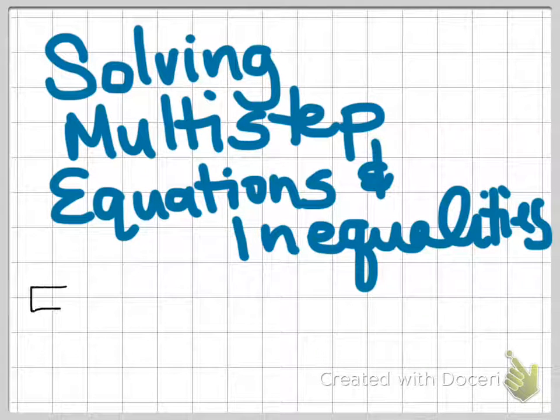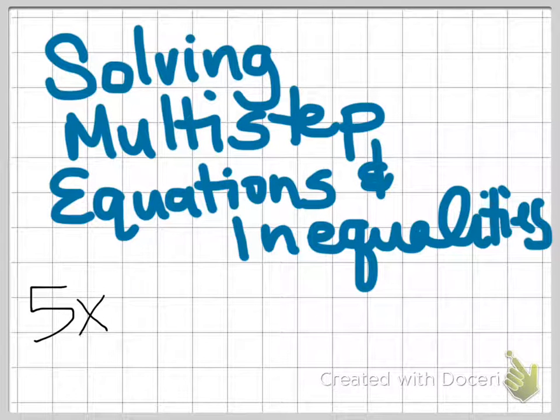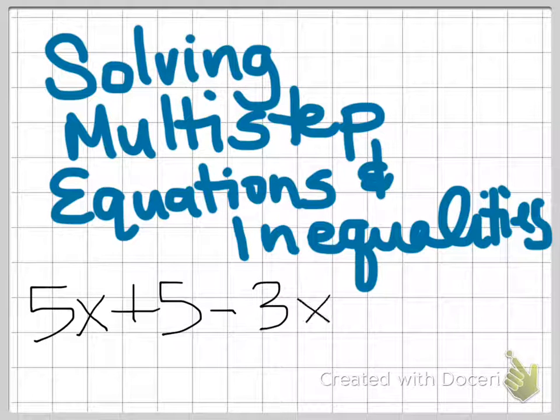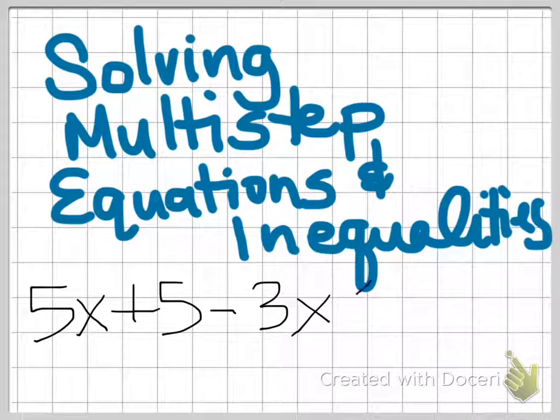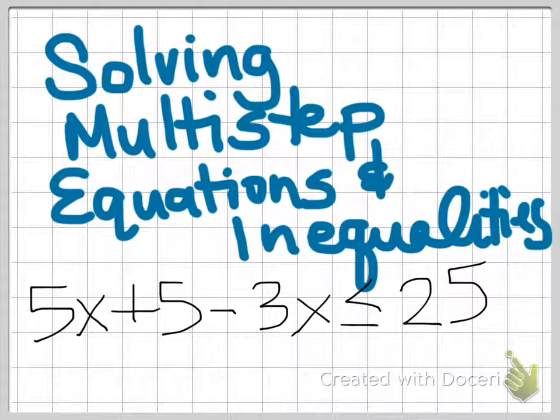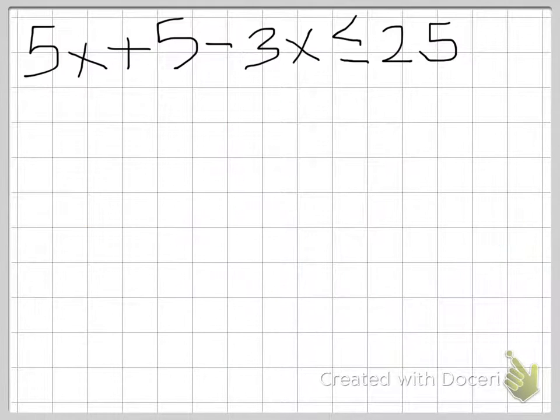Number one says 5x plus 5 minus 3x is less than or equal to 25. So this is the equation from the previous slide. 5x plus 5 minus 3x is less than or equal to 25.